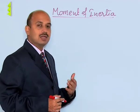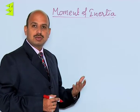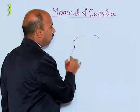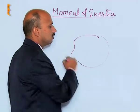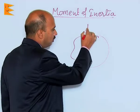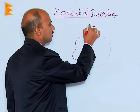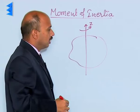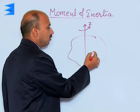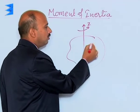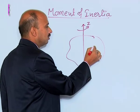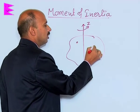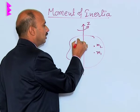So, what is the inertia in case of rotational motion? Suppose you have taken a rigid body like this, and it is rotating about the z-axis. In this case, suppose this body is made of a large number of particles — this is m1, m2, and m3.